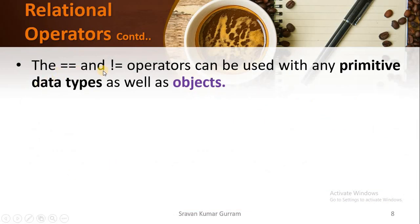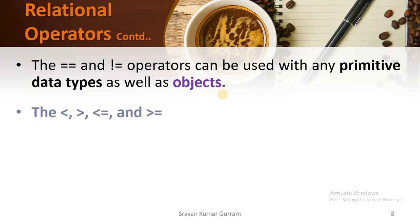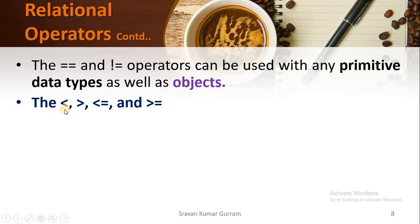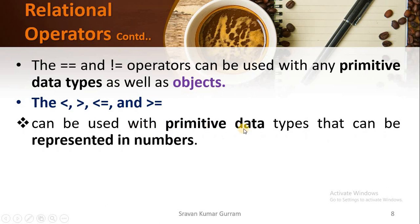The == and != operators can be used with any primitive data types as well as objects. We already covered data types, including primitive and user-defined data types. Coming to the operators less than, greater than, less than or equal to, and greater than or equal to — these can only be used with primitive data types that can be represented as numbers, such as character, byte, short, int, etc. Even though we store a character value, internally a character maintains an ASCII value or Unicode.